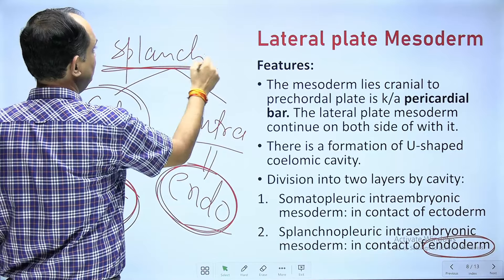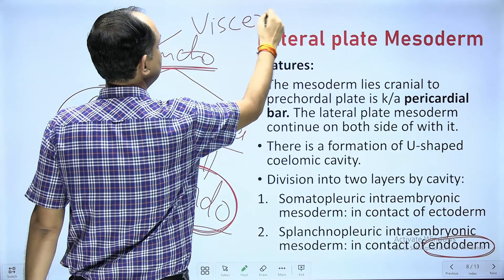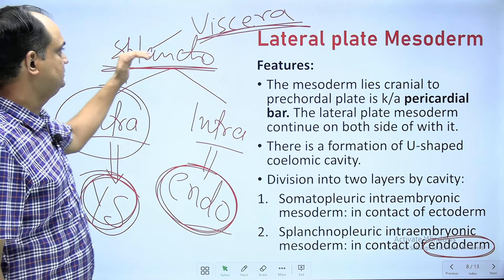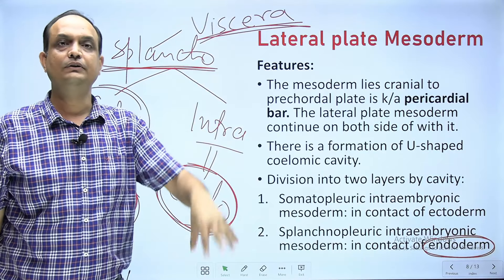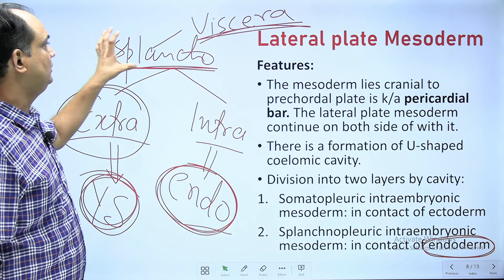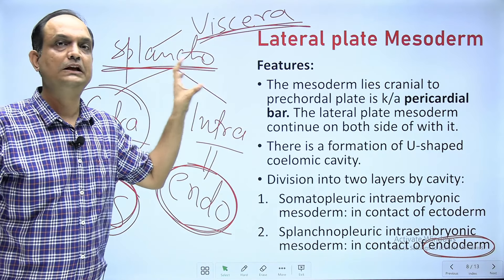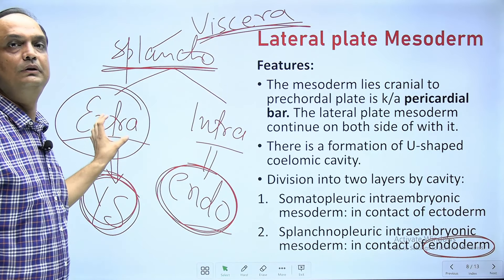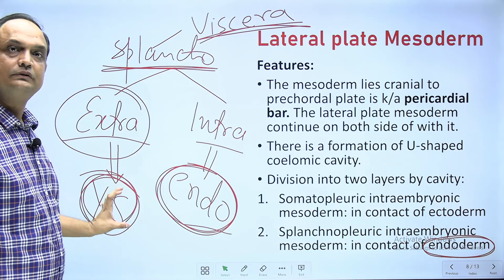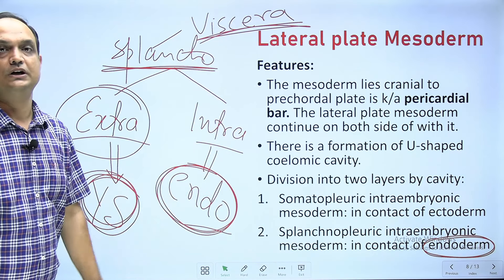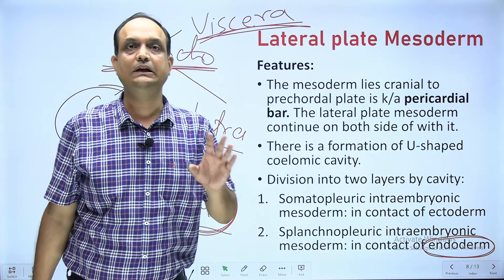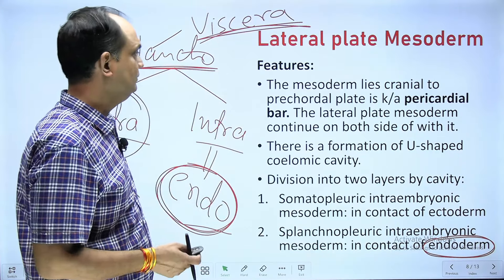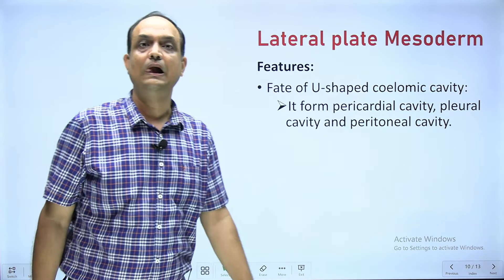'Splanchno' pertains to viscera, and viscera is formed by the endoderm inner lining; the splanchnopleuric layer forms further coverings of the viscera, like the muscle layer. Splanchnopleuric intra embryonic mesoderm is related with the endoderm; splanchnopleuric extra embryonic mesoderm is related with the yolk sac, which develops from hypoblast — a future endoderm. In this way you can remember where to find splanchnopleuric and somatopleuric mesoderms.